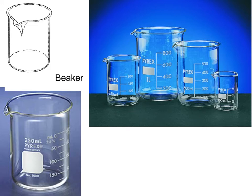This first one we're going to look at is called a beaker. Beakers are characterized by this shape. The ones we have in the lab have this little pour spout that makes pouring easier. Their function is fairly simple — it's simply to store a liquid.